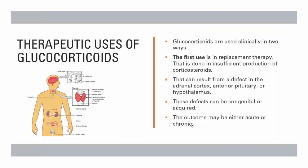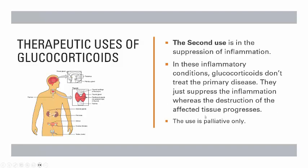Glucocorticoids are used clinically in two ways. The first use is replacement therapy, done in cases of insufficient production of corticosteroids, which can result from a defect in the adrenal cortex, anterior pituitary, or hypothalamus. These defects can be either congenital or acquired due to disease, and the outcome could be acute or chronic insufficiency. The second use is suppression of inflammation — in these conditions, glucocorticoids don't treat the primary disease; they just suppress the inflammation, but destruction of the affected tissue will progress. The use in these cases will be only palliative.